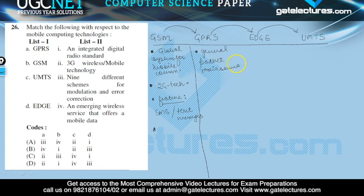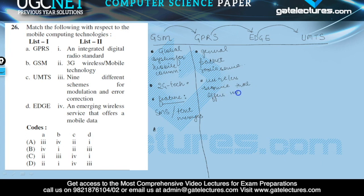GPRS is a wireless service that offers mobile data at a faster speed compared to GSM.